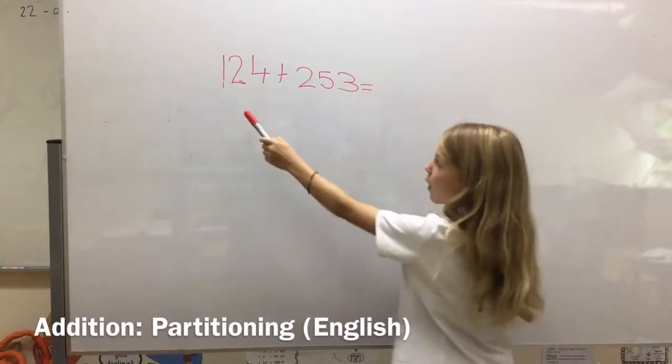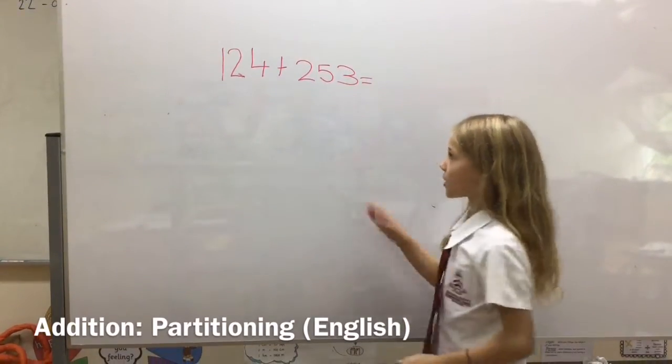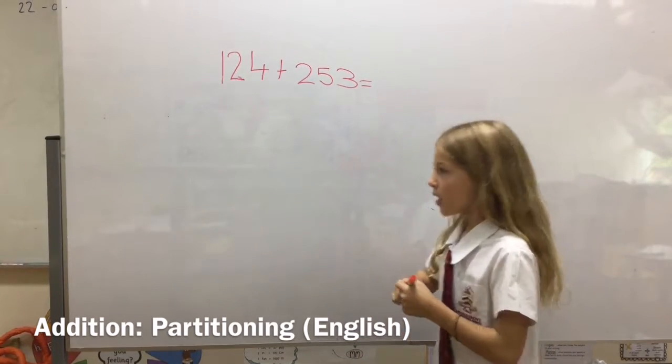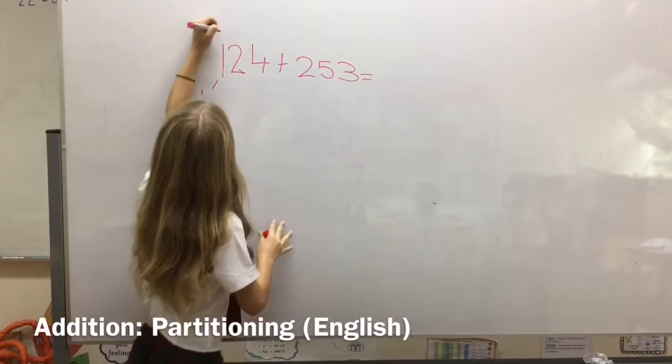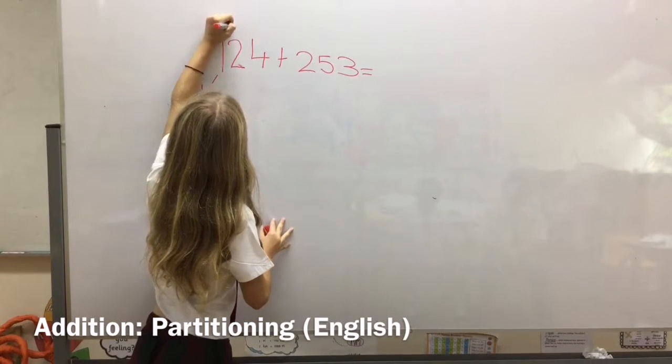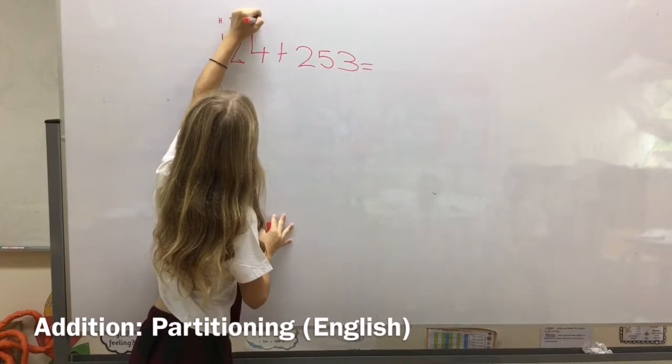First, we're going to be doing 124 plus 253. We're going to be looking at our hundreds, tens, and ones.